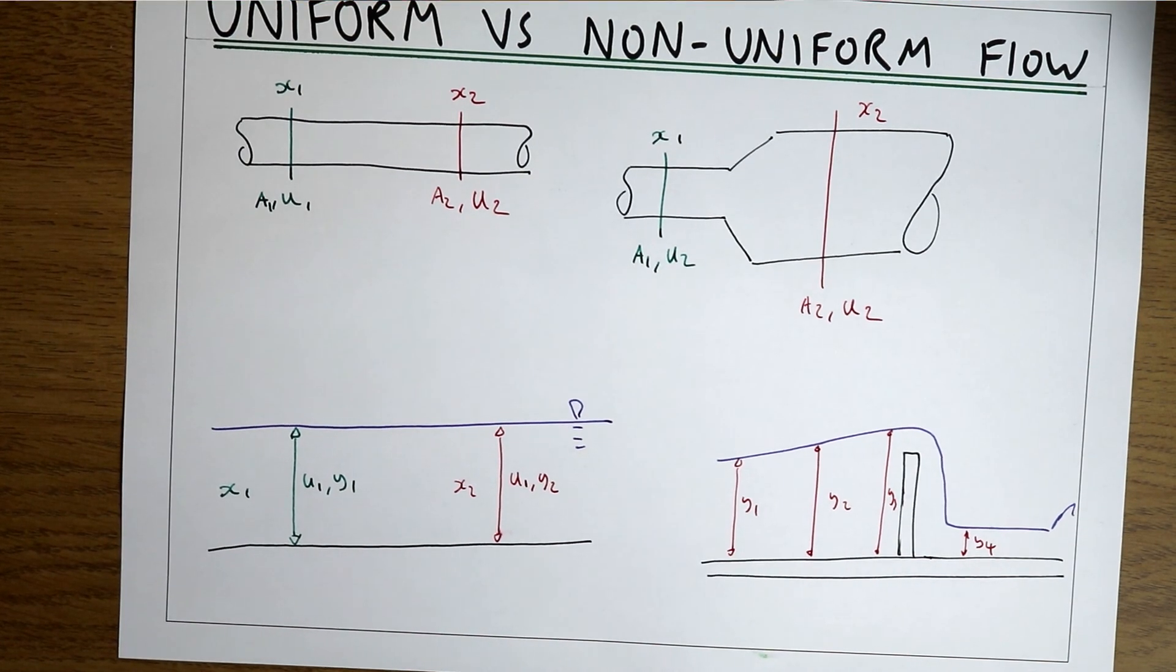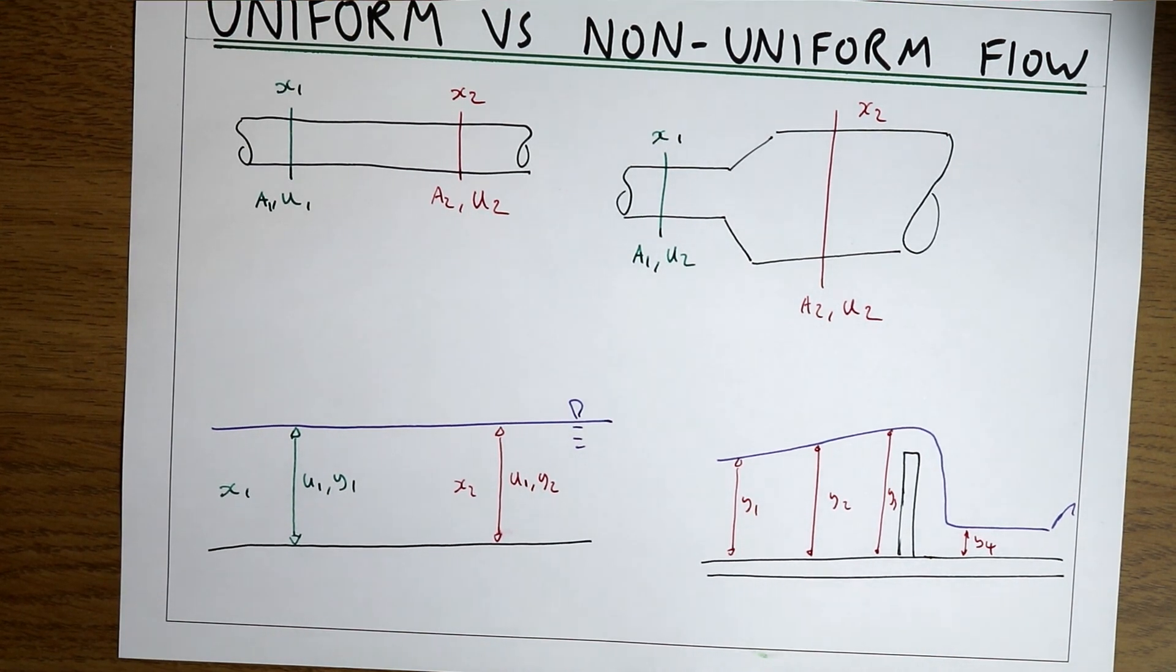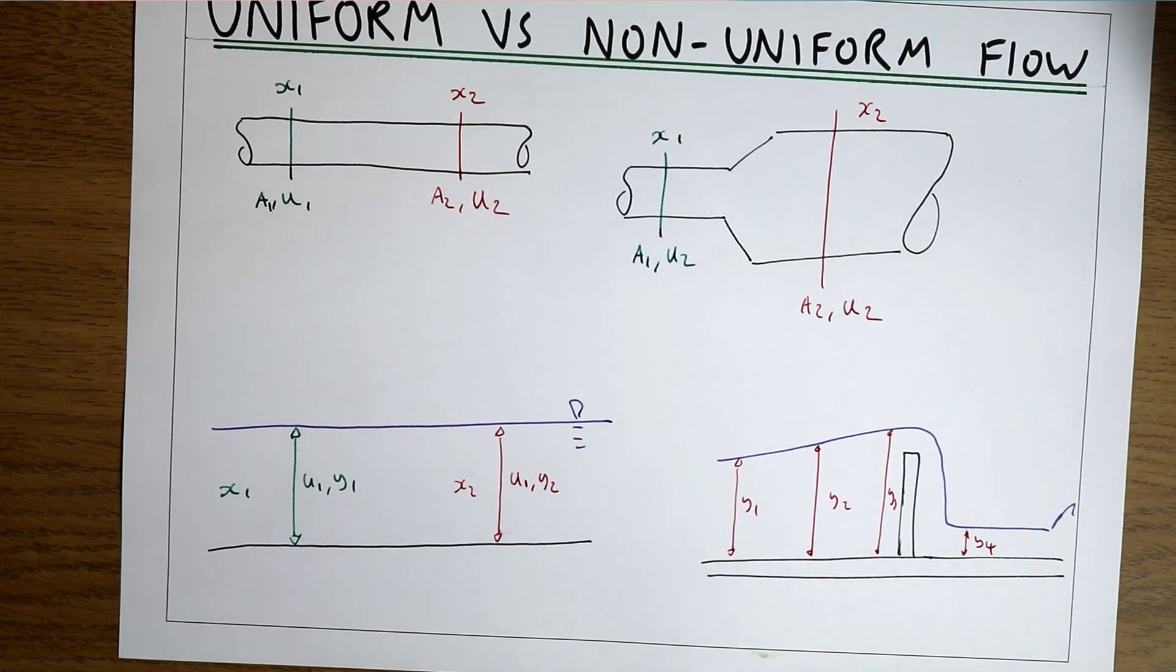So uniform flow is any flow where the flow parameters are the same regardless of how far down the channel you move or pipe. Non-uniform flow is where the flow parameters are changing as we move down the channel or pipe.